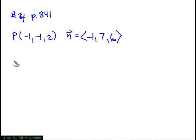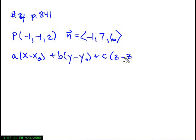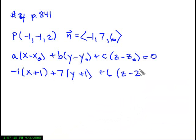Let's just write down the point normal form of the equation of a plane, which is going to be a times x minus x-naught, plus b times y minus y-naught, plus c times z minus z-naught equals zero. Remember, a, b, and c are the coordinates of the normal vector N, and x-naught, y-naught, and z-naught are the coordinates of the point P. So substituting, we have -1 times the quantity x plus 1, plus 7 times the quantity y plus 1, plus 6 times the quantity z minus 2 equals zero.